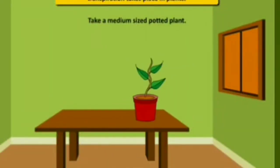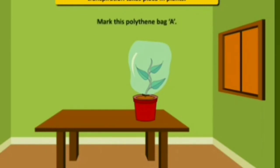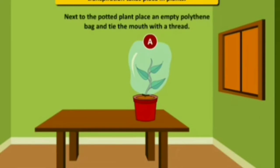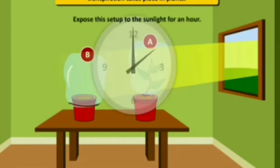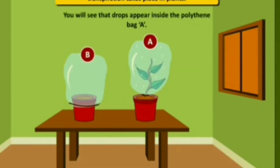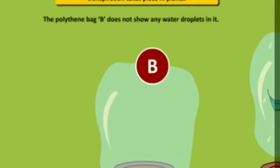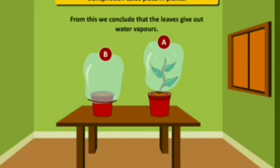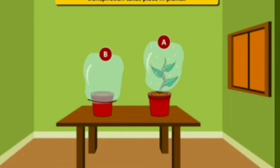Take a medium-sized potted plant, cover it with a polythene bag, and tie its mouth at the base of the stem with thread — mark this polythene bag A. Next to the potted plant, place an empty polythene bag and tie the mouth with thread — mark this polythene bag B. Expose this setup to sunlight for an hour. After an hour, drops appear inside polythene bag A, while polythene bag B does not show any water droplets. We conclude that leaves give out water vapors, and due to condensation, tiny drops collect inside bag A. This experiment shows that plants give out water to the atmosphere through transpiration.